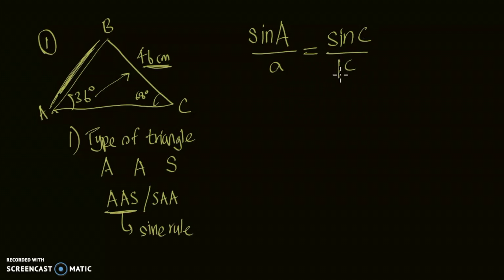So now what we're looking for is the side c. So let's substitute all the other values inside first. So it'd be sine 36 over 46 is equal to sine 68 over c.